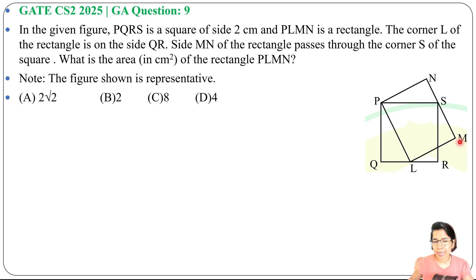What is the area in cm squared of rectangle PLMN? Four options are given. It's given that PQ, PS, SR, and QR each side is 2 cm. It's a square and PLMN is a rectangle.